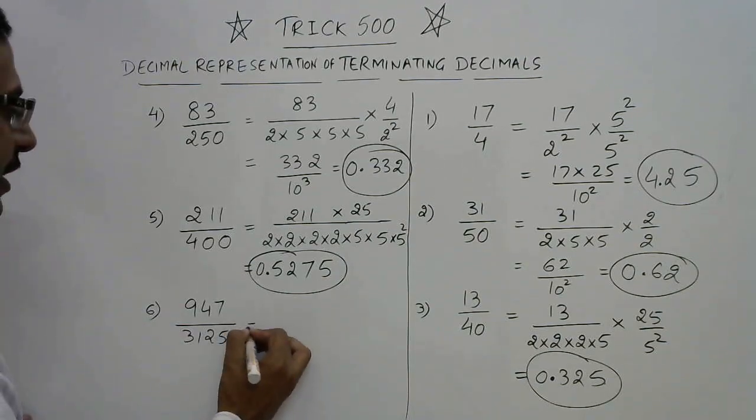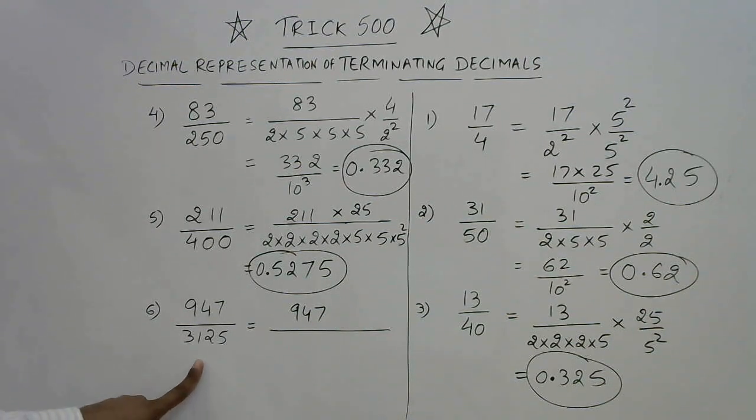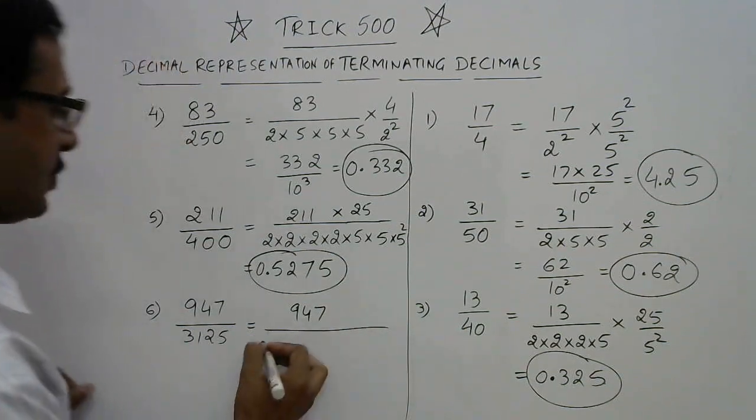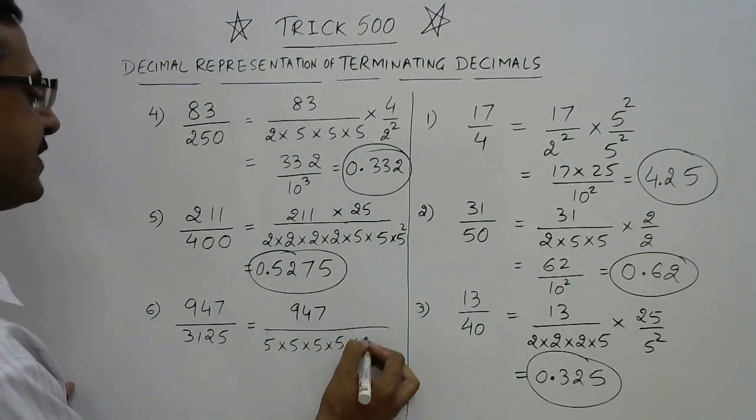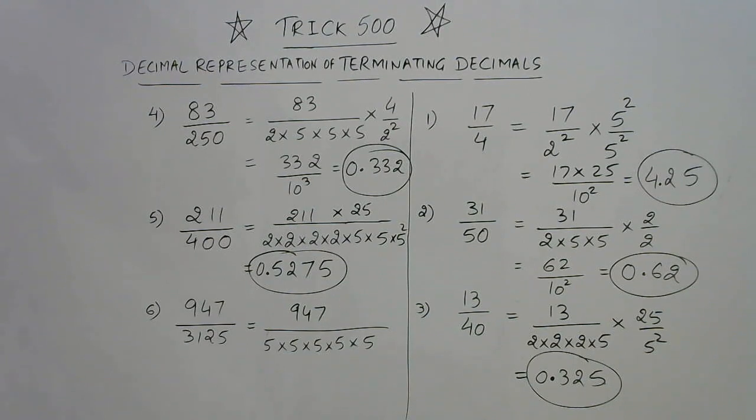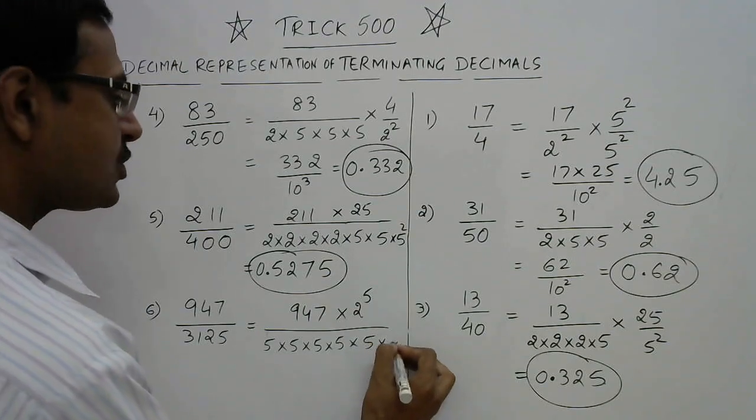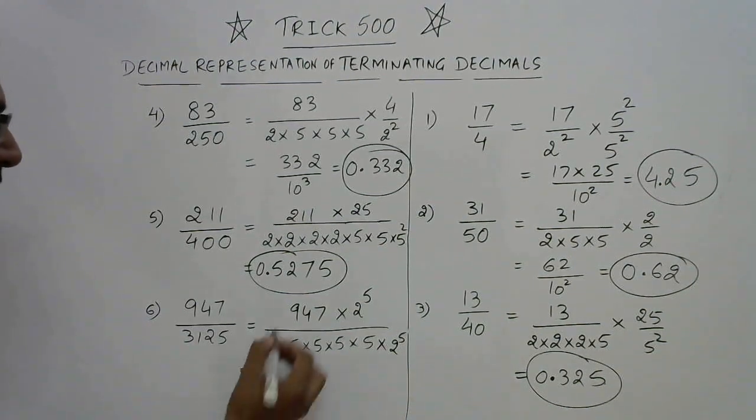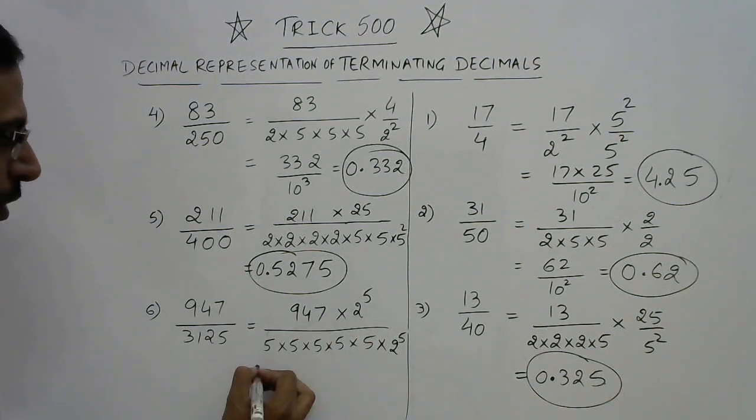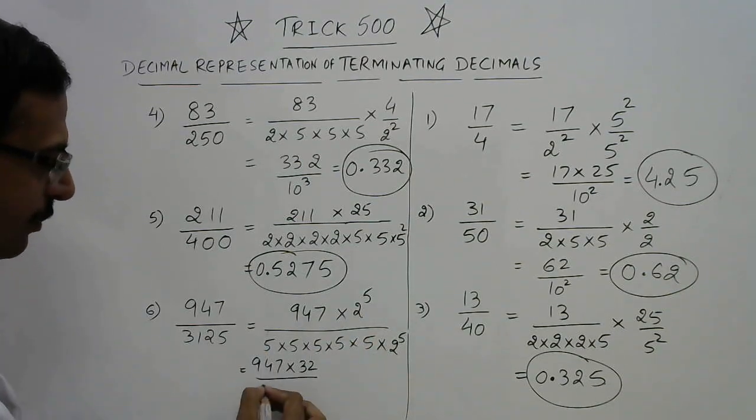Let us have one more question: 947 upon 3125. Now if you know this number, whenever you see this number you should count the powers of 5. This is 5, 5s are 25, 5s are 125, 5s are 625, and 5s are 3125. So we have 5 fives here but no twos, so we need 5 twos, which is 2 raised to power 5. In the denominator also we will have 2 raised to power 5. Now powers of 5 and 2 are equated, and we are left with 947 into 32, which is 2 raised to 5. This is 5 times, so 1 followed by 5 zeros. Your answer for the question will be obtained by multiplying this first.